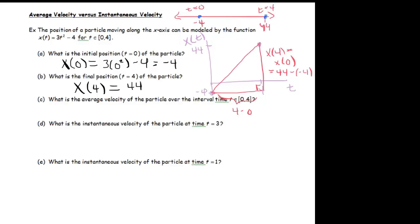So if we write that all out here, we have that our average velocity is x of 4 minus x of 0, divided by 4 minus 0. And that is equal to 44 minus negative 4, divided by 4 minus 0, which is 48 over 4, which is 12. Now there are no units, so let's just say units per second, even though seconds weren't the units, just so we remind ourselves that it is a velocity.